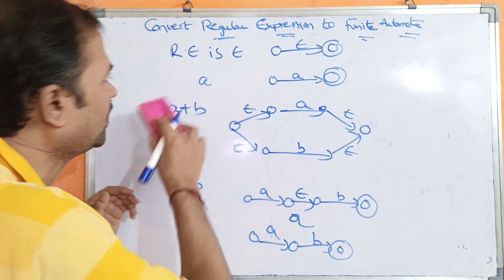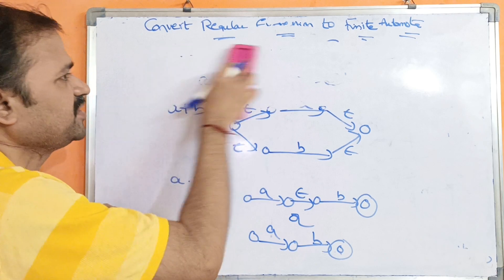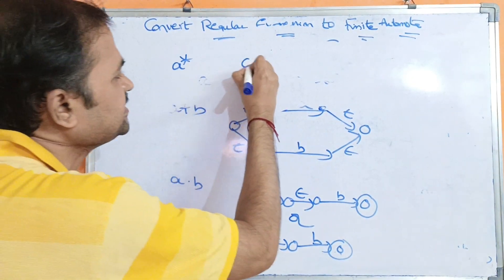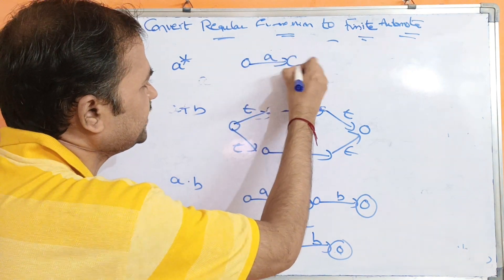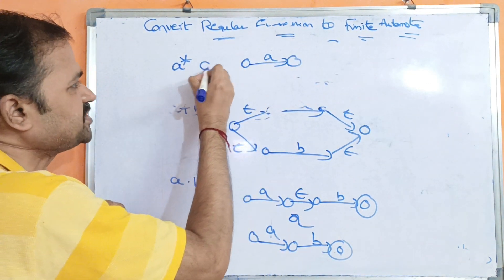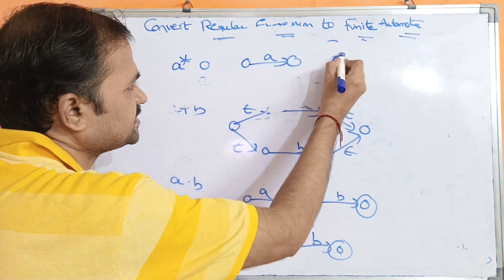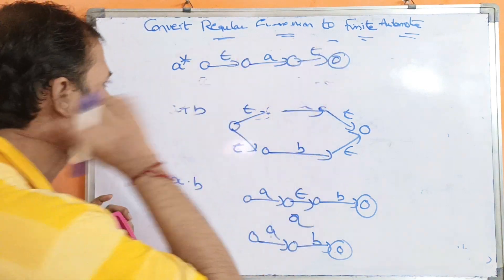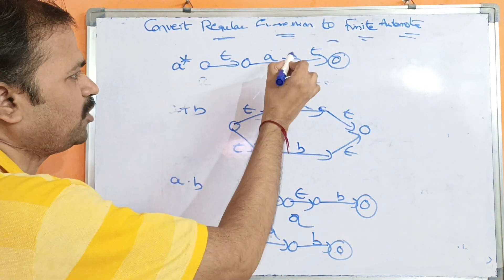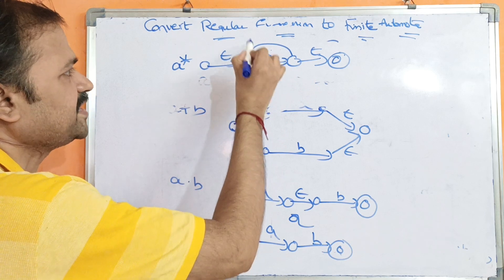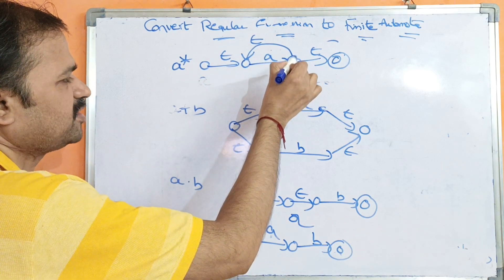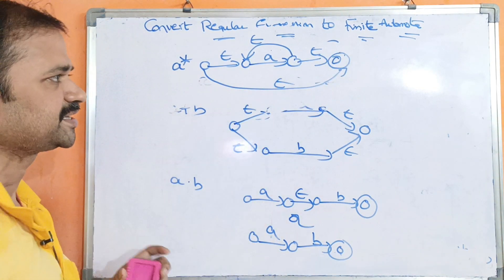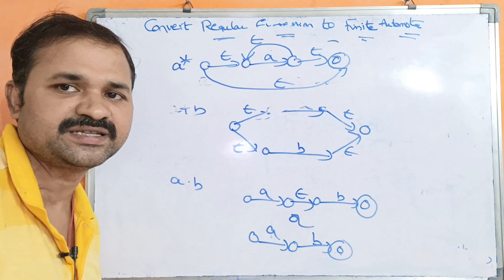Now let us see the last regular expression — A star. For representing A we require two states, and for A star we require two more states. Let one be the final state. Apply epsilon transitions: A star means zero or more occurrences. Applying epsilon on one state moves us to the next, and similarly for the loop back, so we can represent A star in this way.